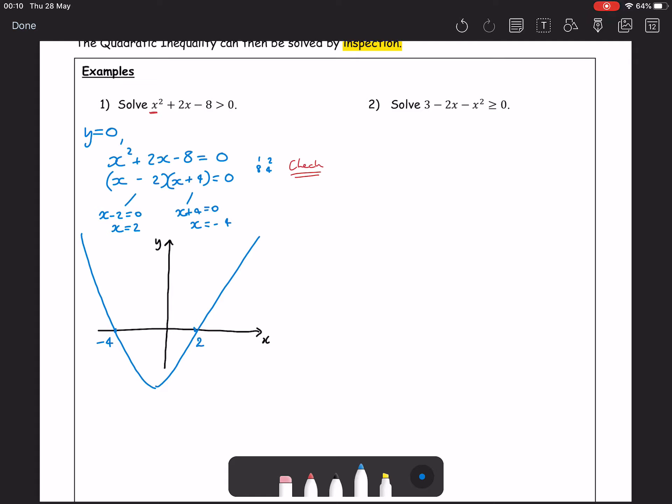Going back to actually what the question is asking, it's saying when is this graph greater than 0. So if we look at our x-axis, anything above the x-axis is greater than 0, and anything below the x-axis is less than 0.